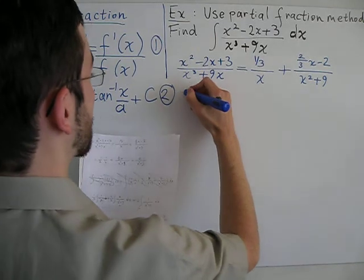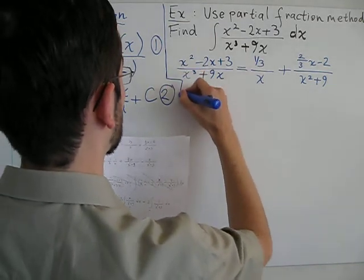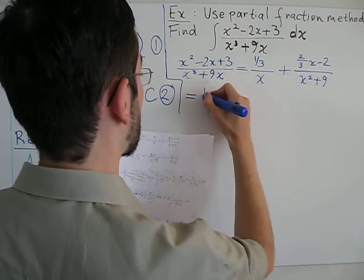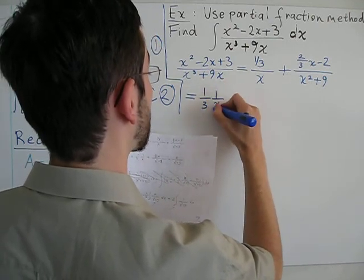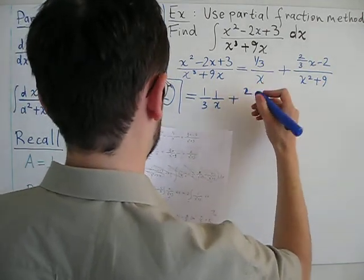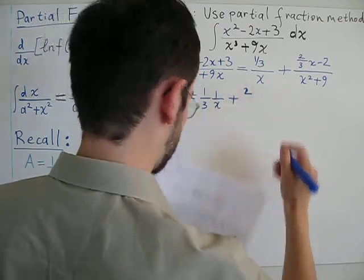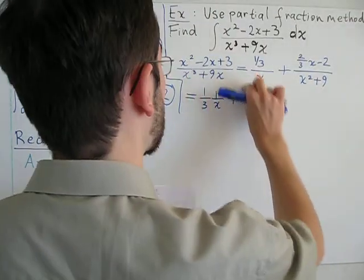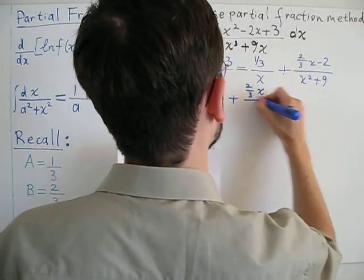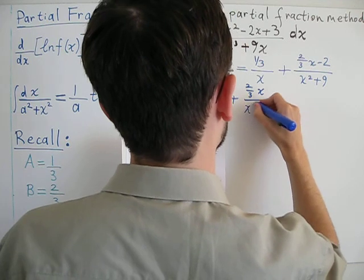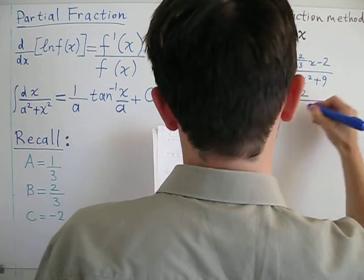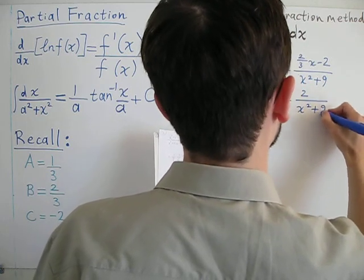And, let's rewrite this right-hand side. So, if we rewrite this right-hand side, just to make it look nicer, it's 1/3 times 1 over x, plus, separate the terms, 2/3 x over x squared plus 9 minus 2 over x squared plus 9.